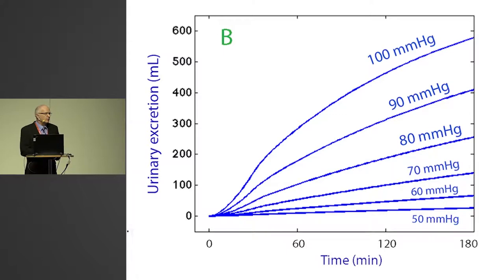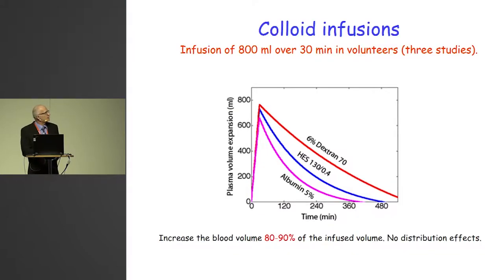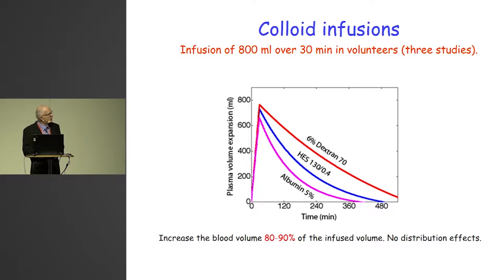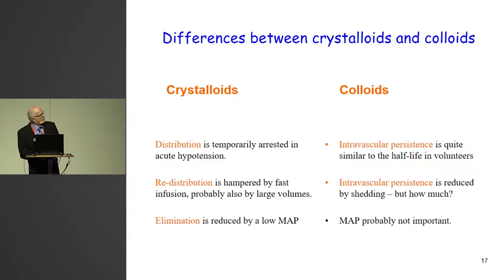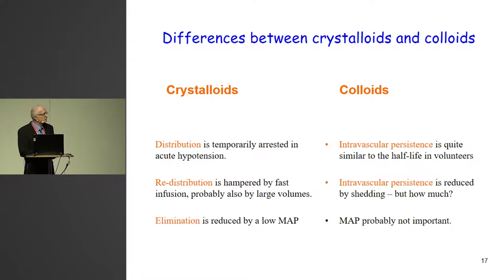We have a couple of factors that affect how crystalloid fluid distributes. Looking at colloids, they don't have a distribution phase — they look like this: the plasma volume expansion from 20 ml/kg shows an exponential elimination with an intravascular persistence half-life of between 2 and 3 hours. Regarding comparisons, we know very little about colloid kinetics. I have seen in volunteers that intravascular persistence corresponds closely to urinary excretion, but that is in volunteers and we don't know whether that is the case during surgery or in intensive care.